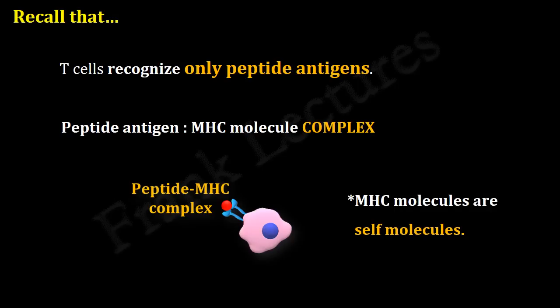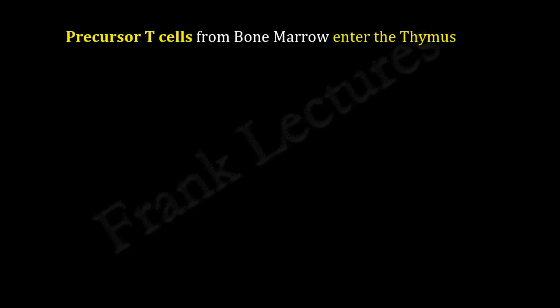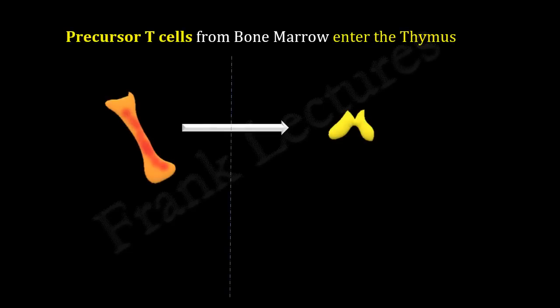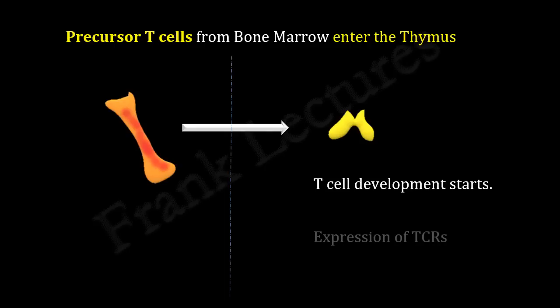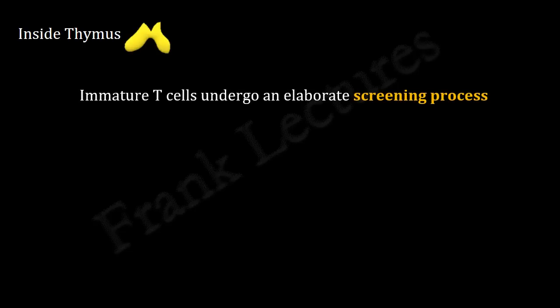Let's begin and understand the mechanisms and processes of central T-cell tolerance. When precursor T-cells from bone marrow first enter the thymus, they lack most of the surface molecules that are characteristic of mature T-cells, and their receptor genes are also not rearranged. Once inside the thymus, these precursor T-cells start developing and they express T-cell receptors of random antigenic specificity. During their maturation in the thymus, immature T-cells undergo an elaborate screening process.